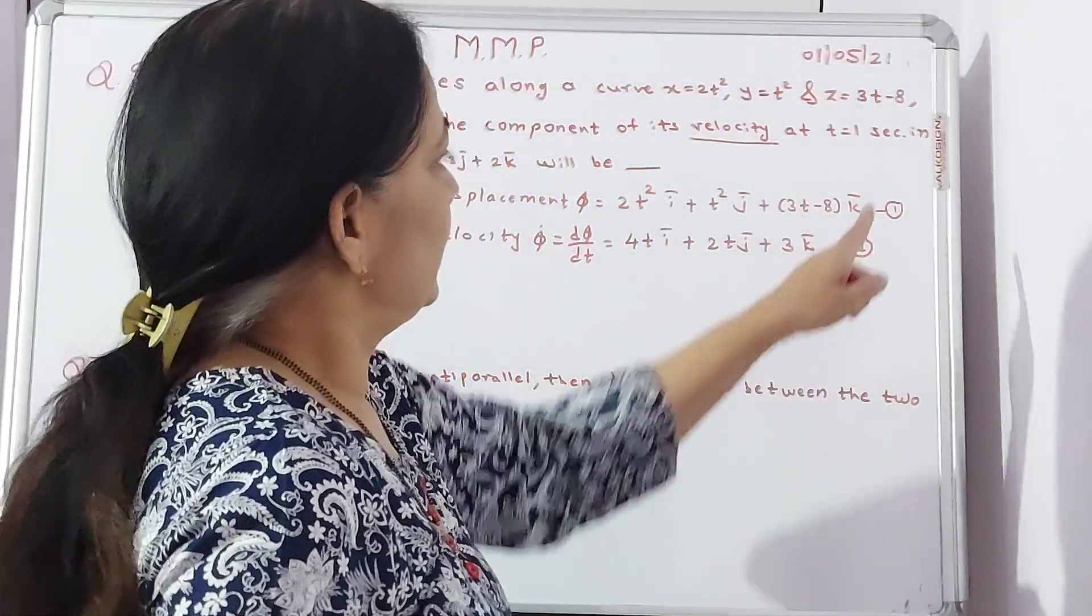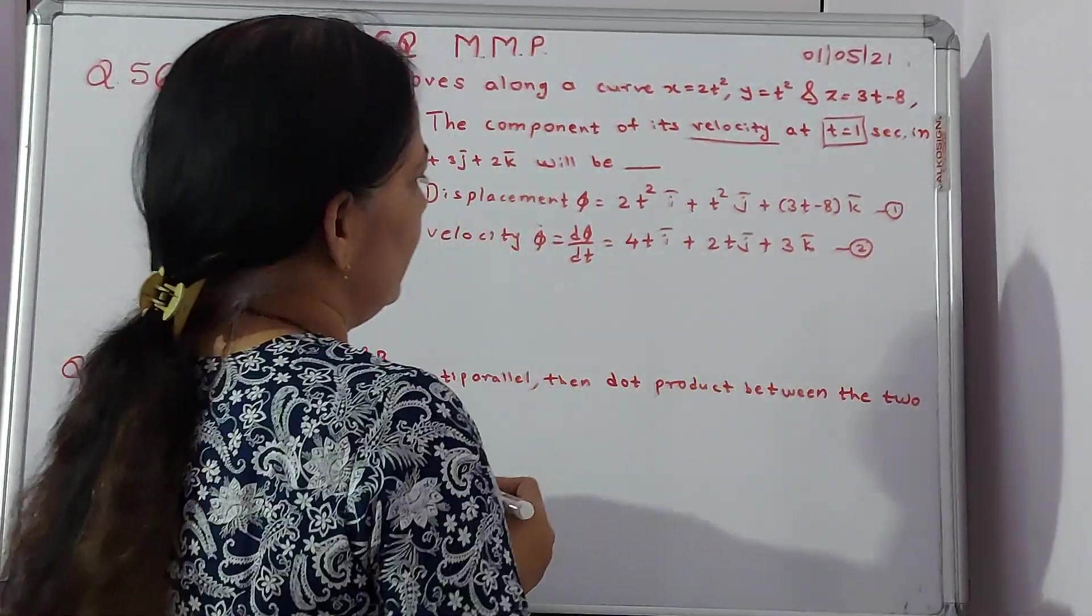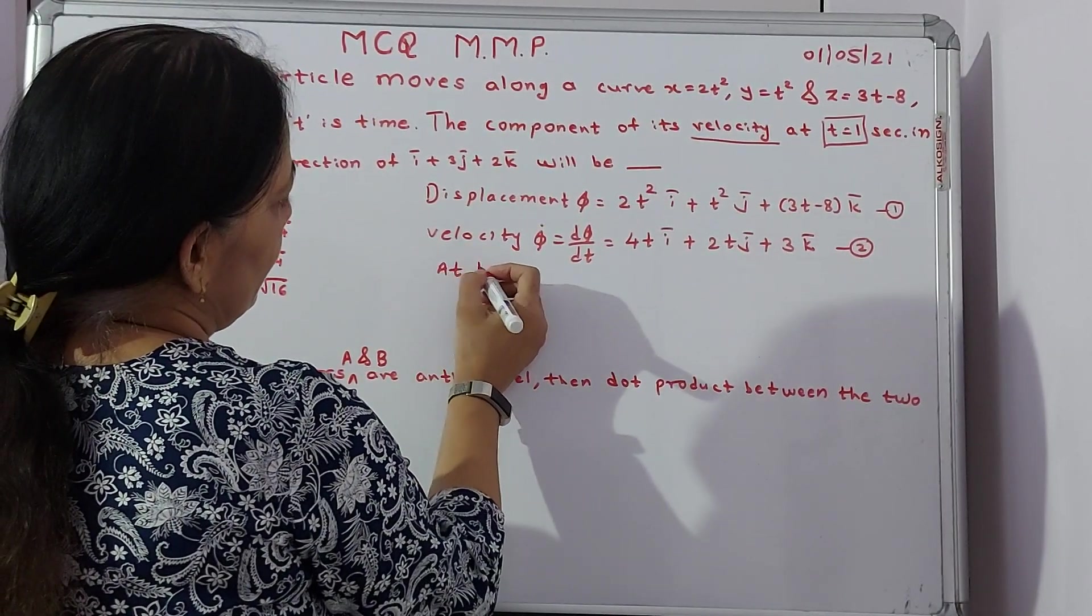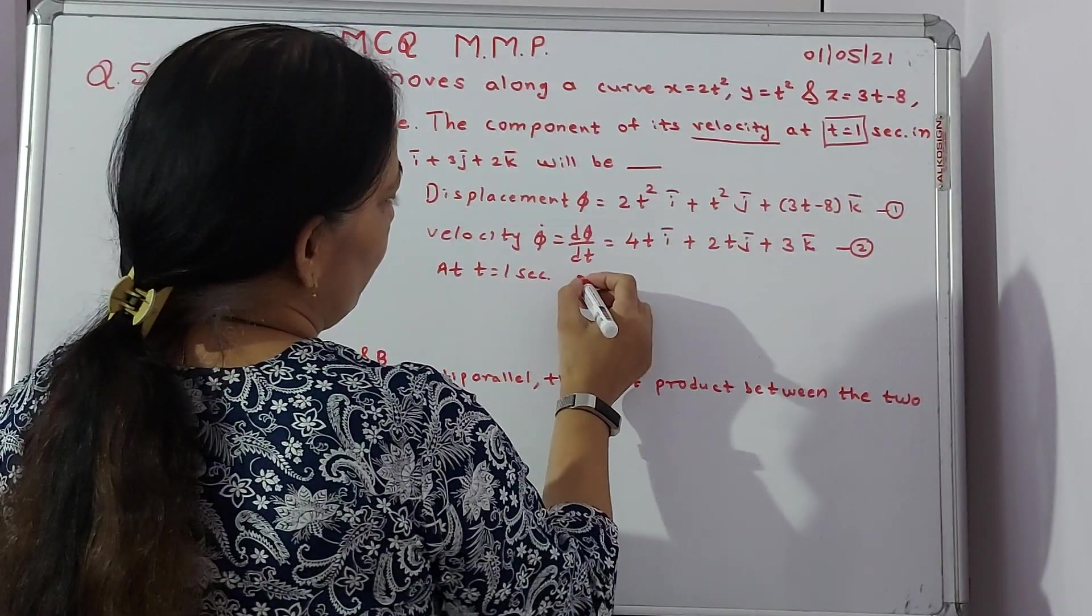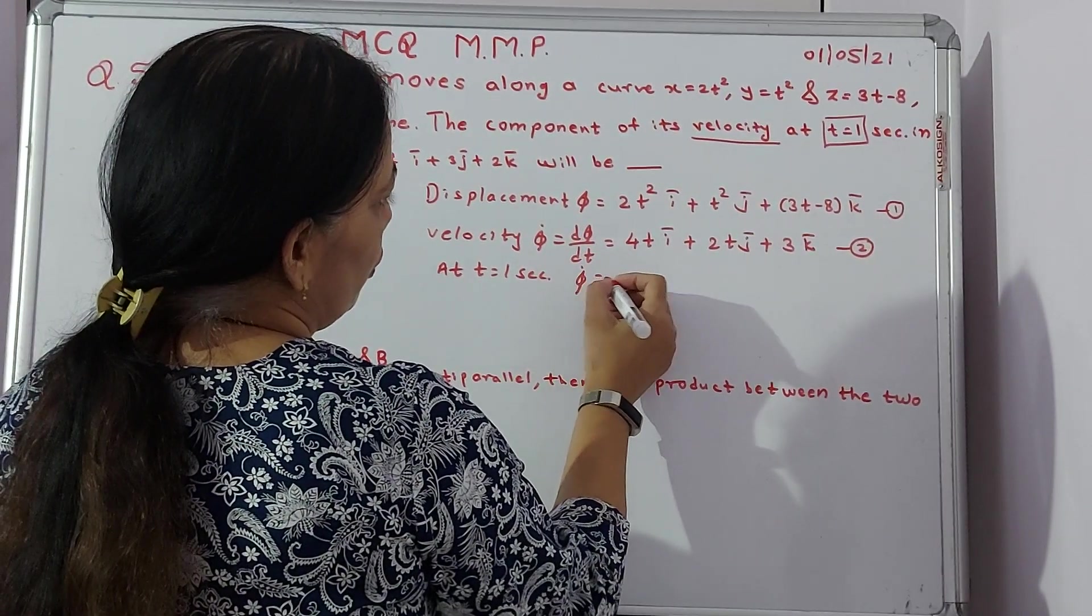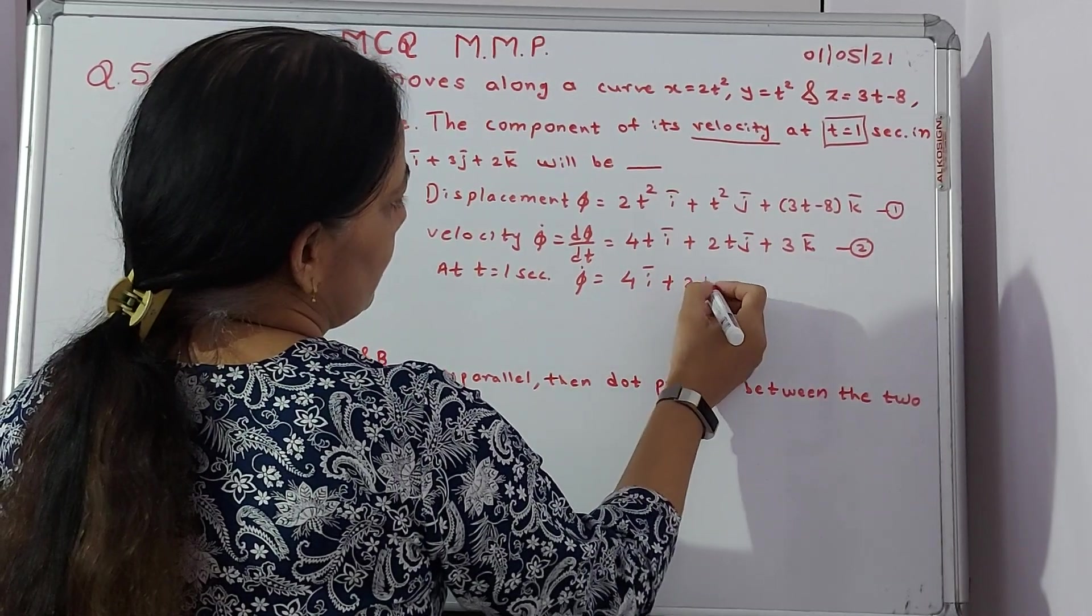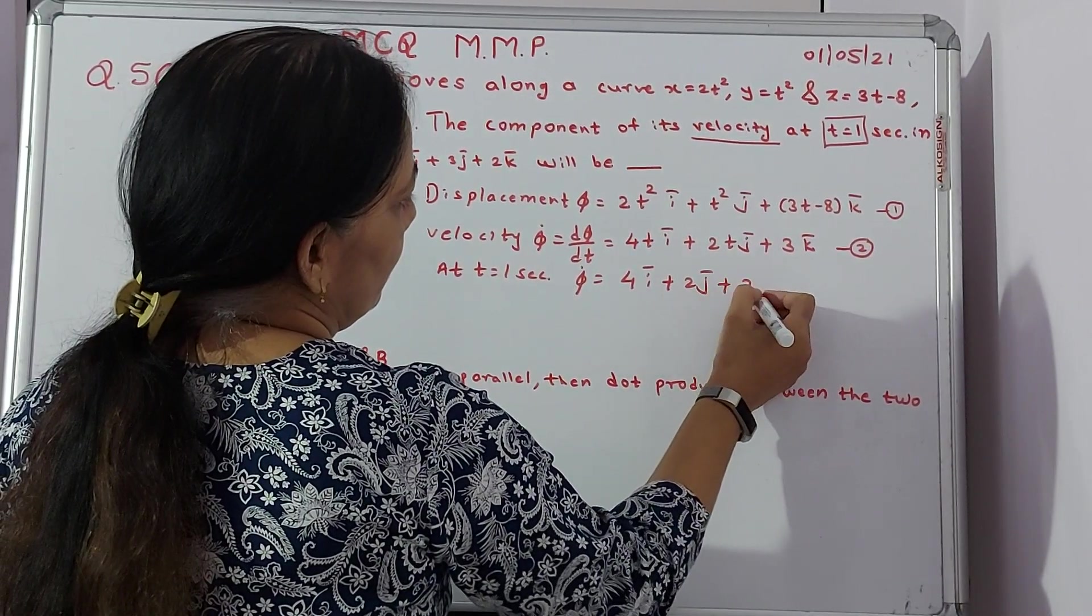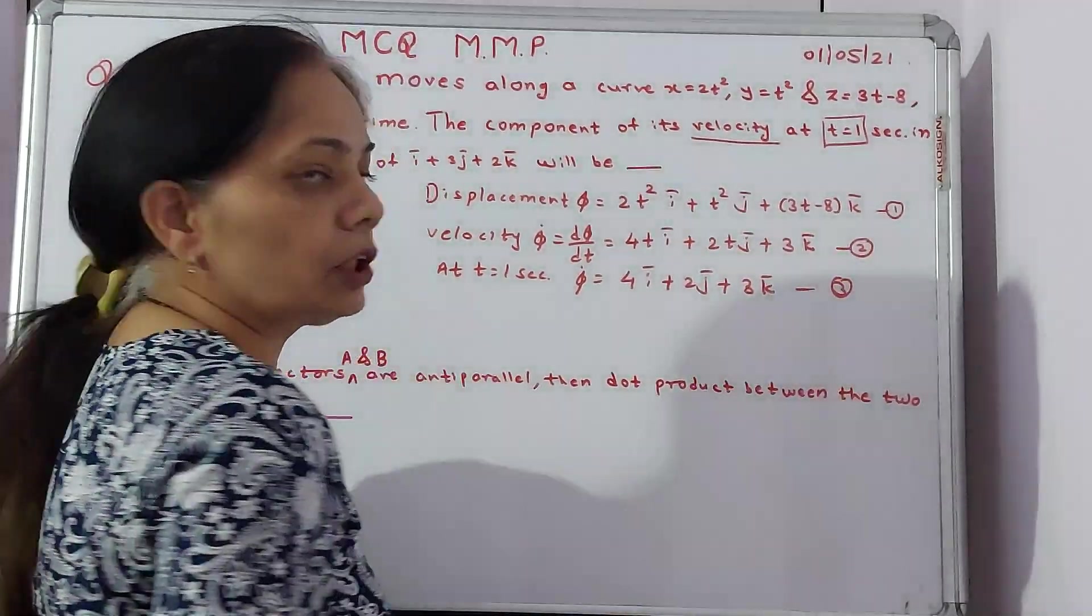After getting this, try and substitute t equals 1 second. We can say at t equals 1 second, phi dot should be 4i plus 2j plus 3k, equation number 3.